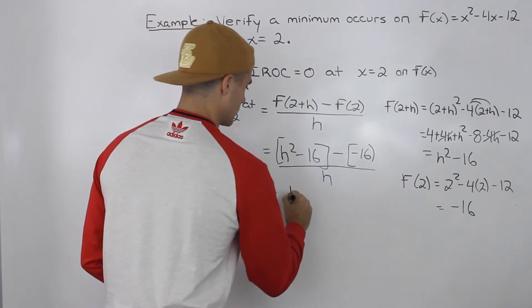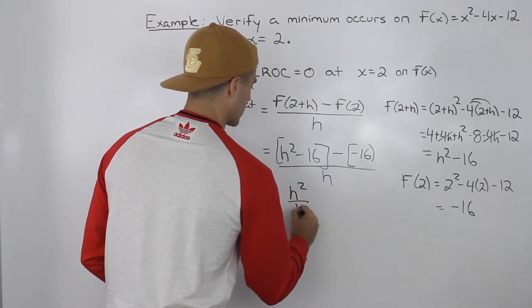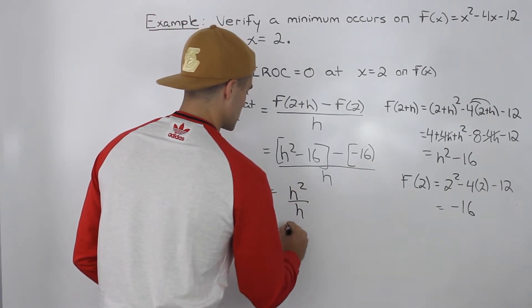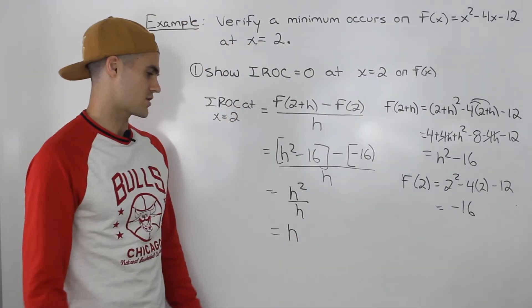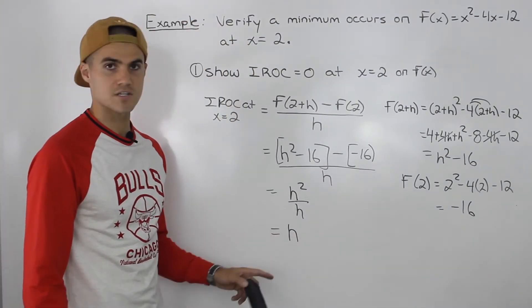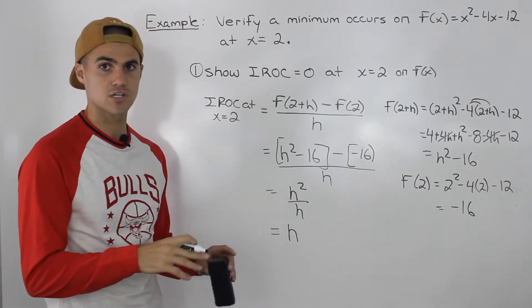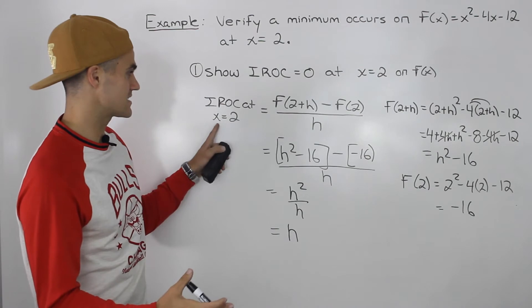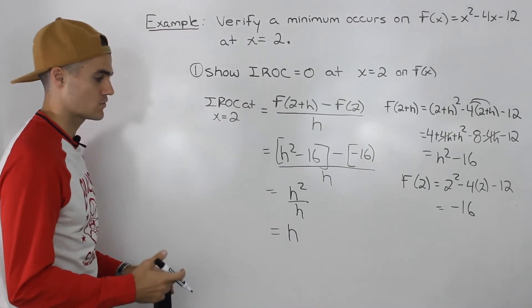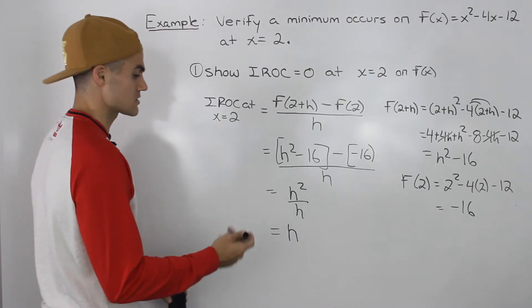So we would just be left with h² over h, which would just give us h. Then we can plug in very small h values to get the best approximations. To get the exact instantaneous rate of change at this x value 2, we plug in 0 for all the h's.